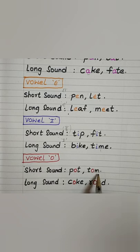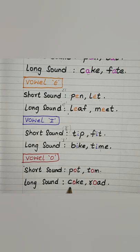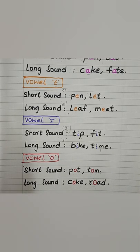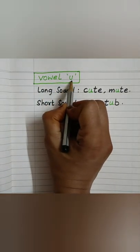Vowel O. The short sound of O is 'o' — T, O, N: Tom. The long sound of O — O, K: Oak. L, O, D: Load.